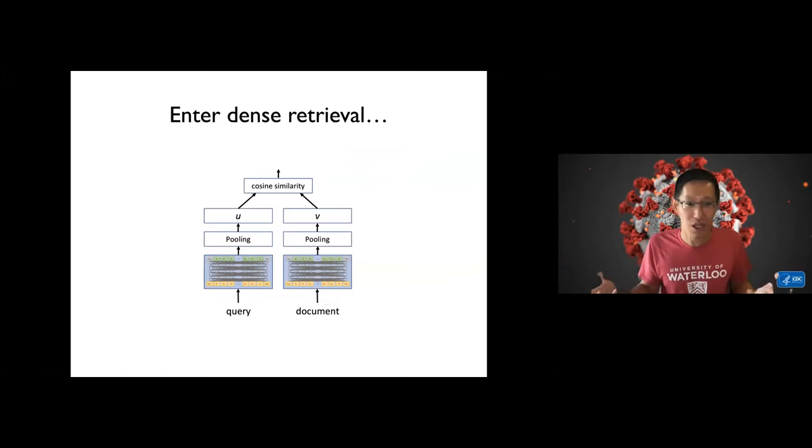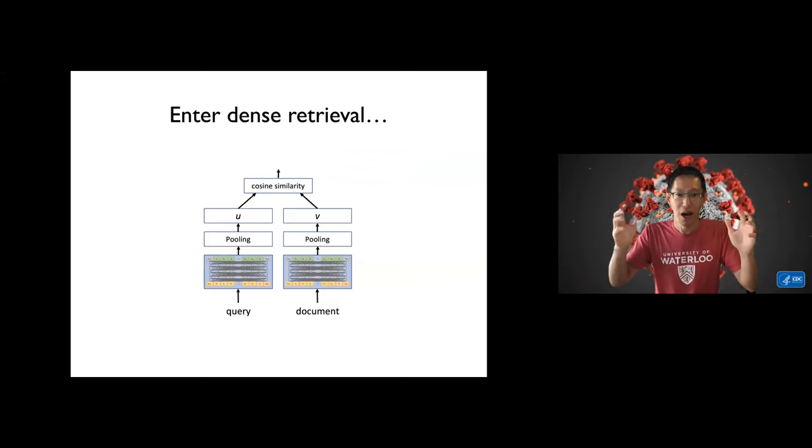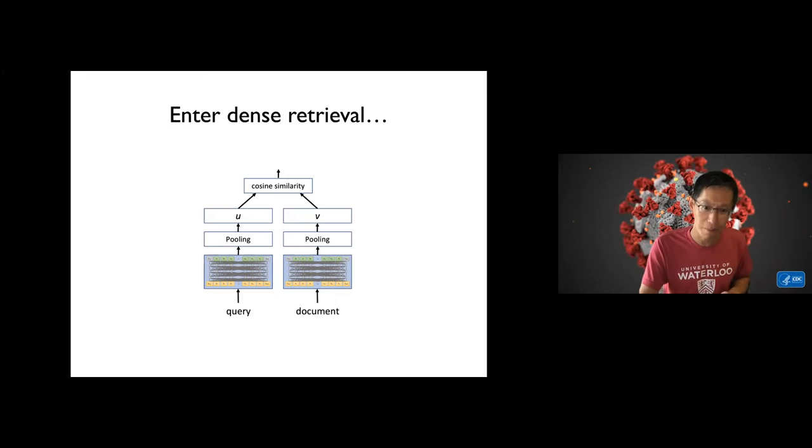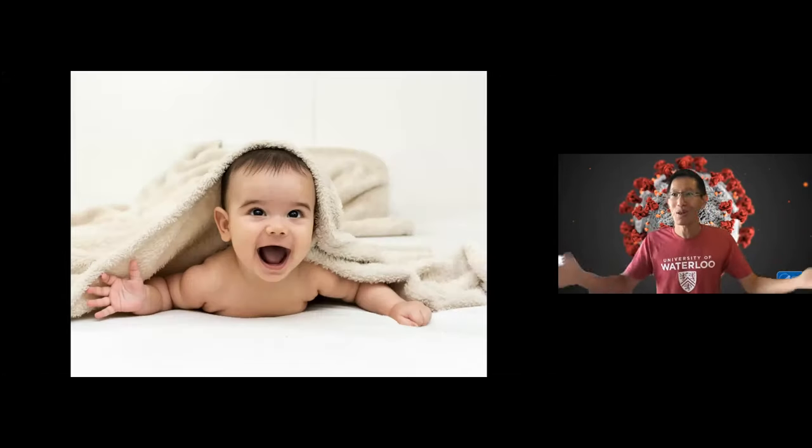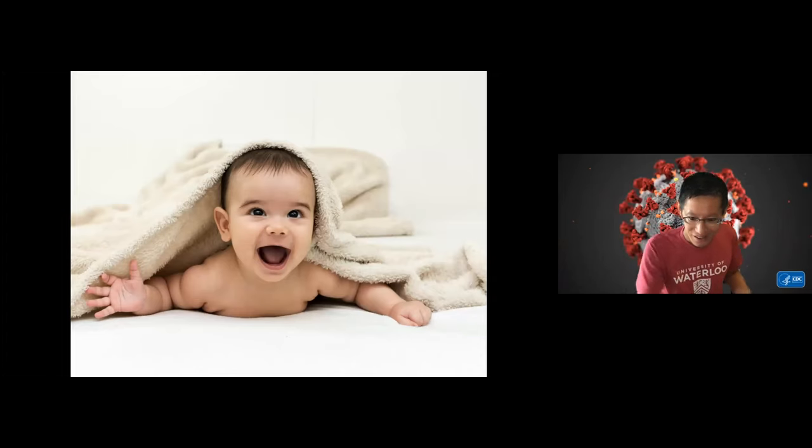However, recently we've seen the advent of these dense retrieval techniques. You take query and document, you run them through a transformer, you do some pooling, some extraction, and then you can do direct comparison and do a direct retrieval in terms of cosine similarity or inner products or something like that. This is exactly how sentence BERT works, this is the diagram that I'm showing here. Now this to me is really, really exciting.